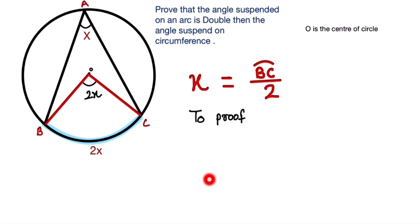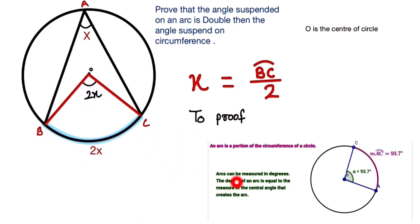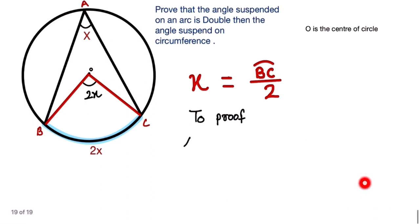Now for the proof, angle BAC is equal to half of angle BOC. Since angle BAC equals x, this equals half of 2x.